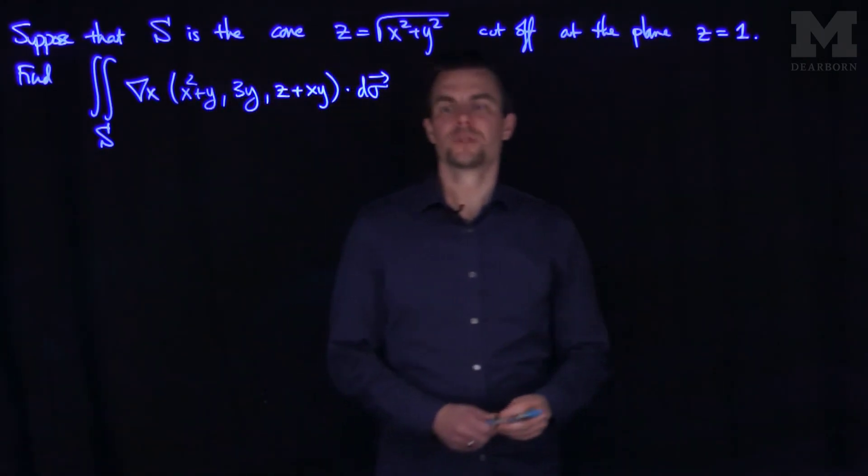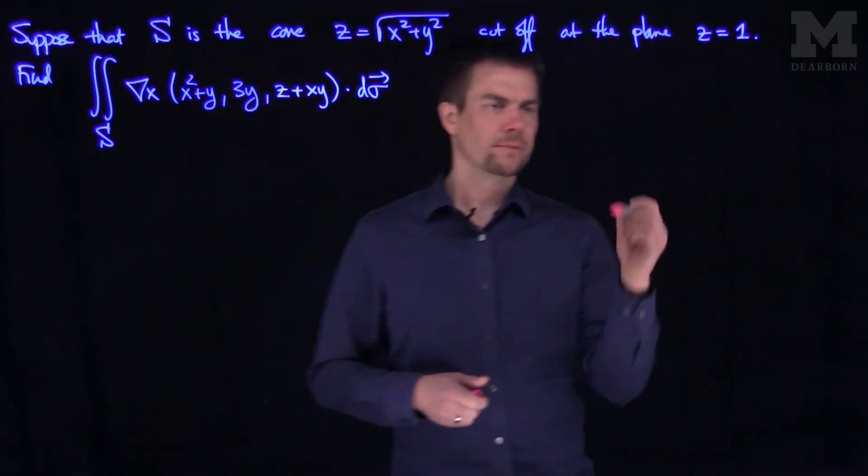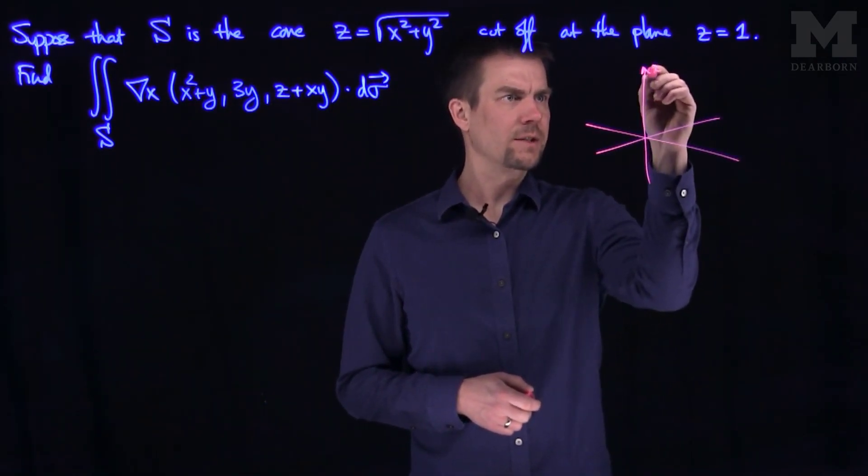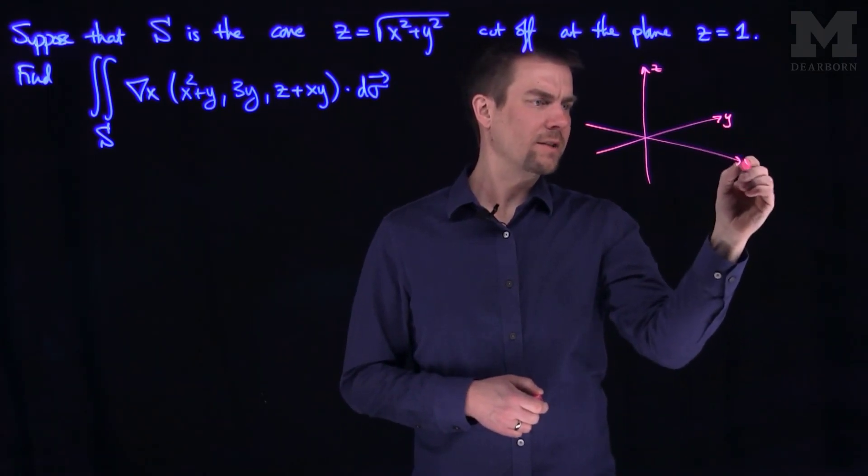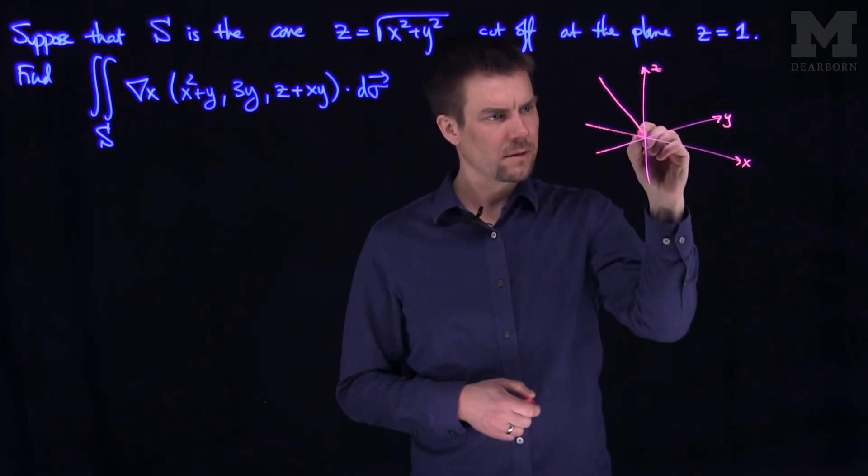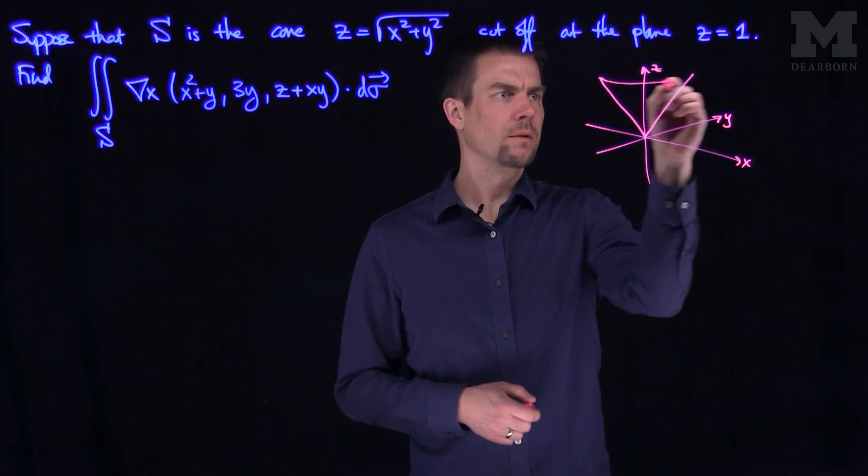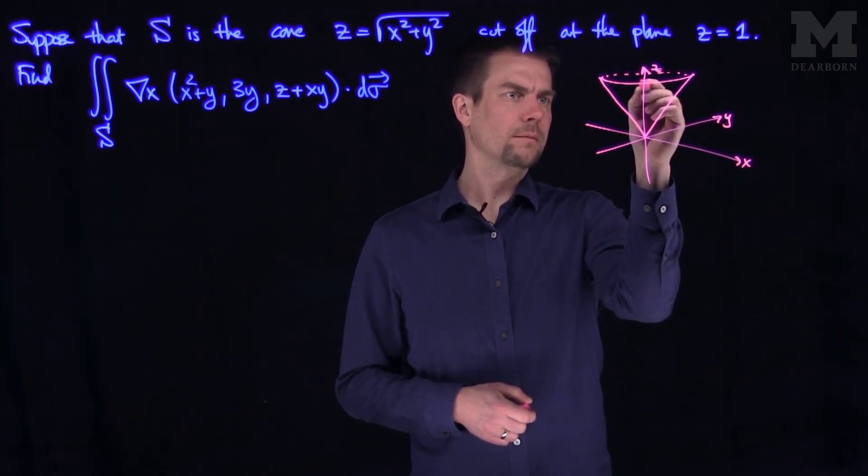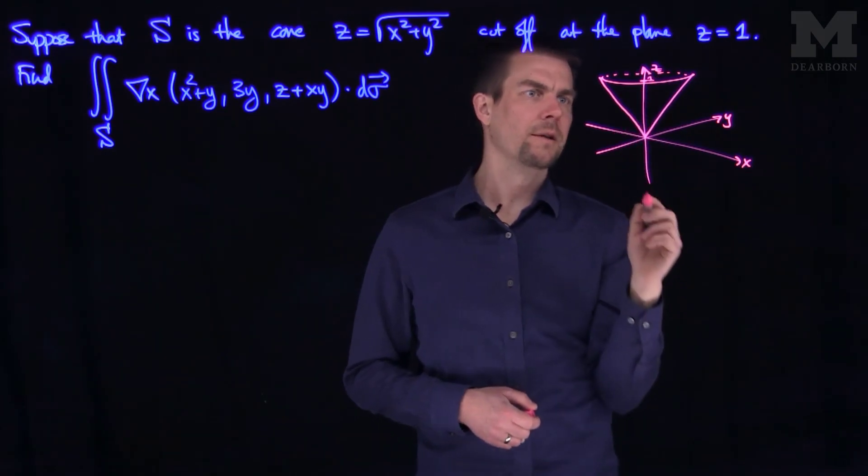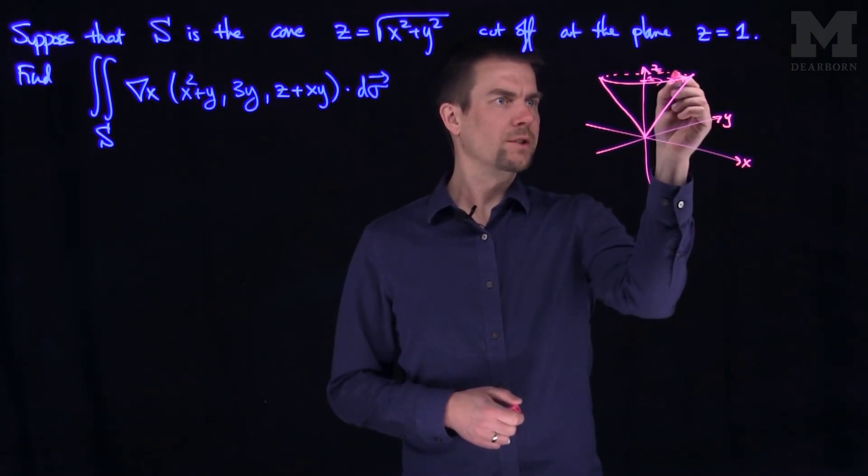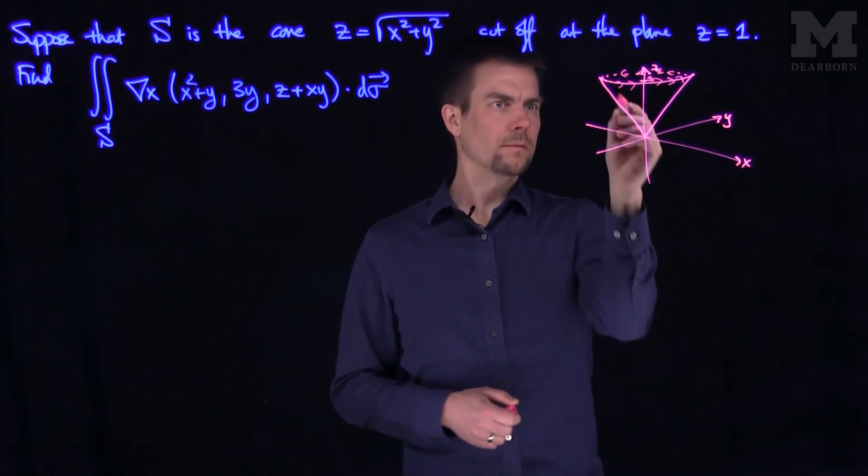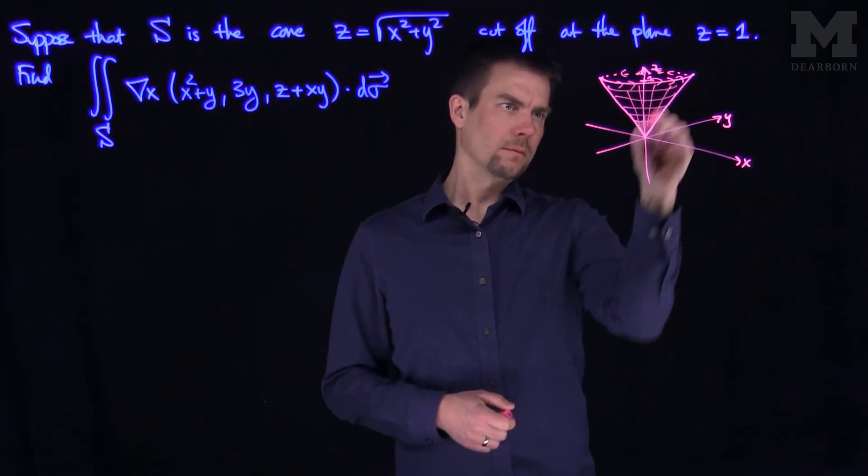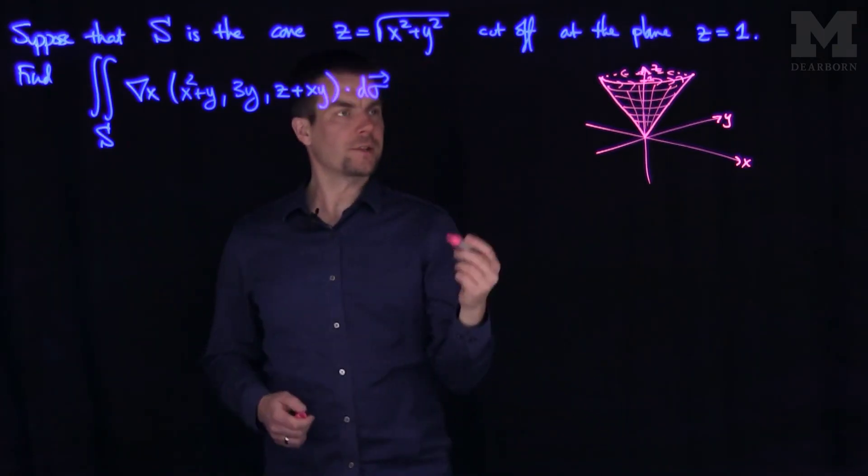So our surface is an open surface. There's the z-axis, the y-axis, and the x-axis. There's our cone. And we're capping this cone at the plane. This is the height z equals 1. So this surface has a boundary. It has an opening at the circle.